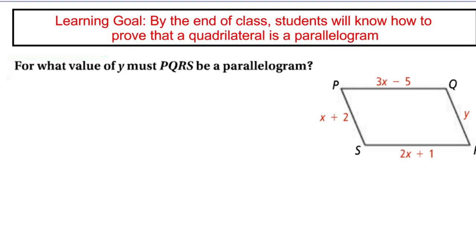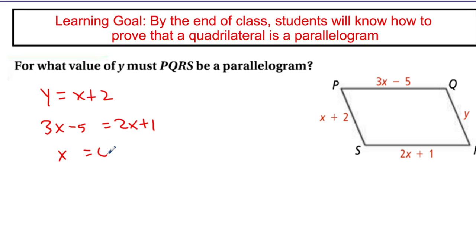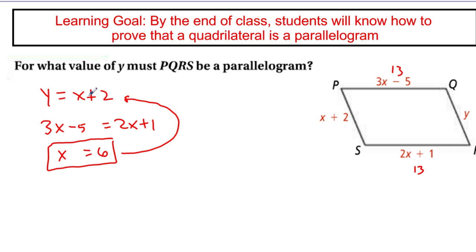Here's a simple example. If I want this to be a parallelogram and I'm looking at the sides, I need both pairs of opposite sides to be congruent. So I need y equals x plus 2, and 3x minus 5 equals 2x plus 1. Solving the second equation: subtract 2x, add 5, and x equals 6. Checking: 3 times 6 is 18, minus 5 is 13; 2 times 6 is 12, plus 1 is also 13. That works — top and bottom are both 13 when x equals 6.